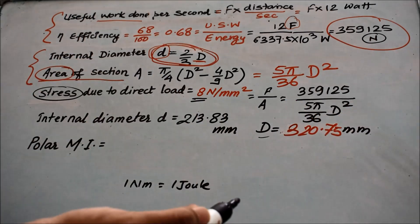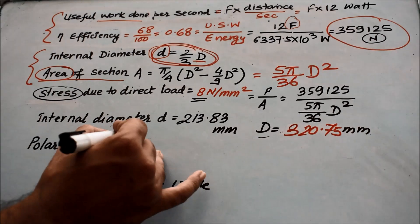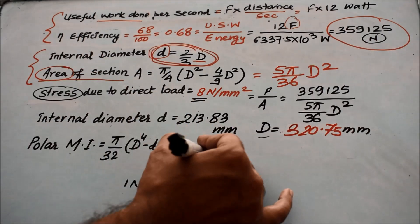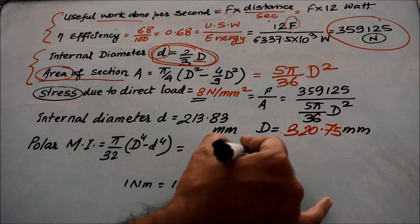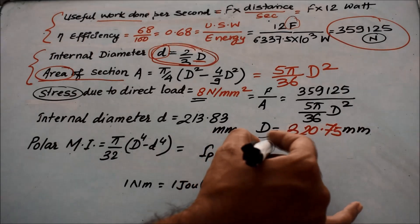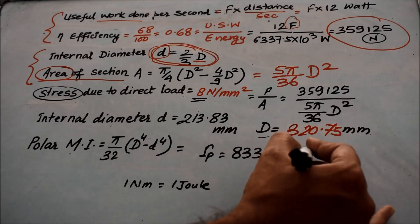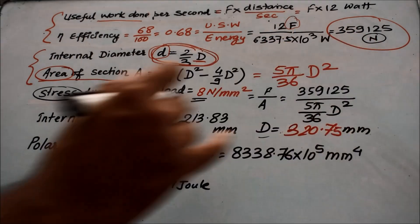Now if you want to find the polar moment of inertia, the formula that you will use is pi by 32 capital D raised to 4 minus small d raised to 4. This equals the value of polar moment of inertia: 833,876 into 10 raised to 5 mm raised to 4.